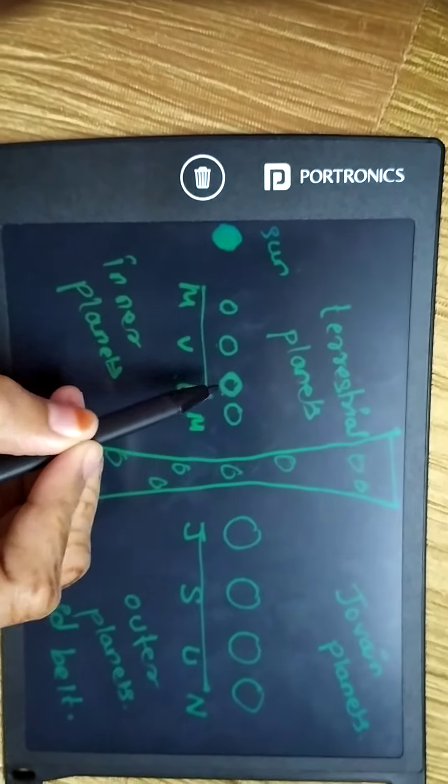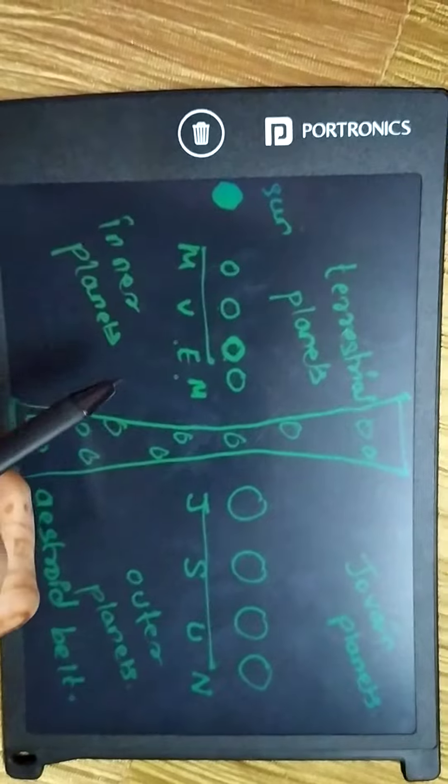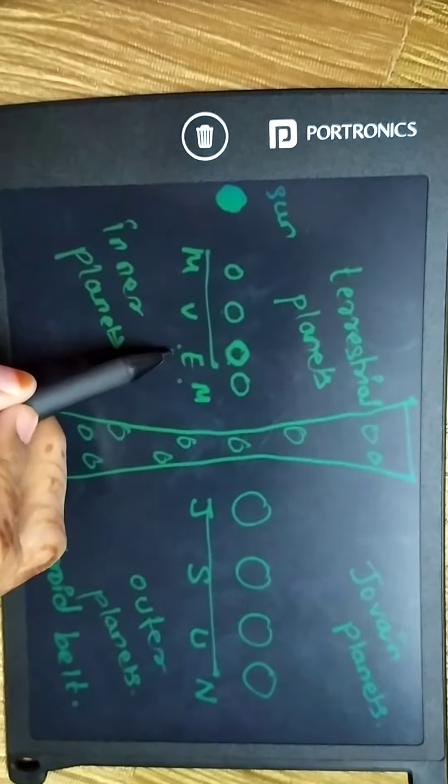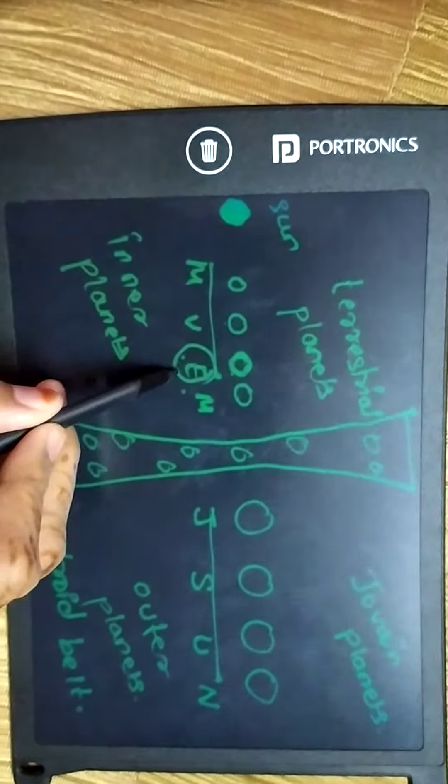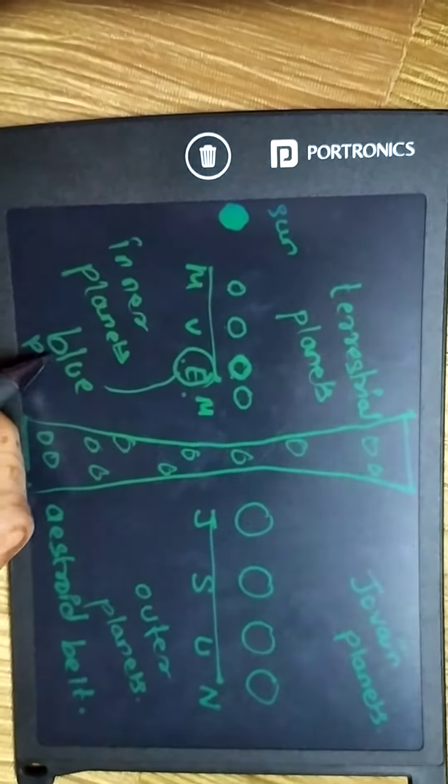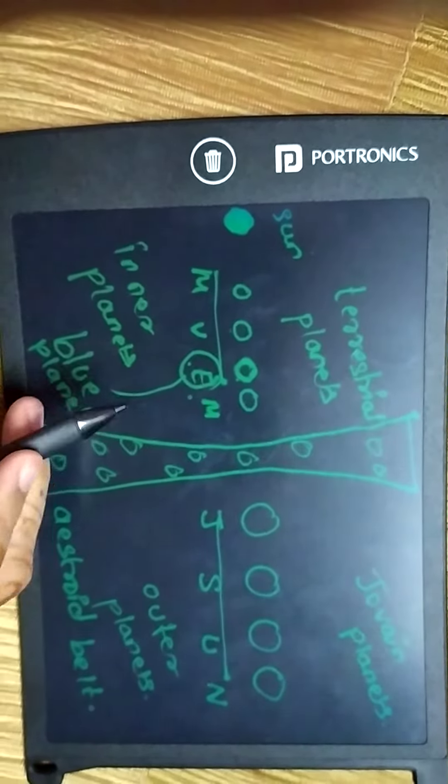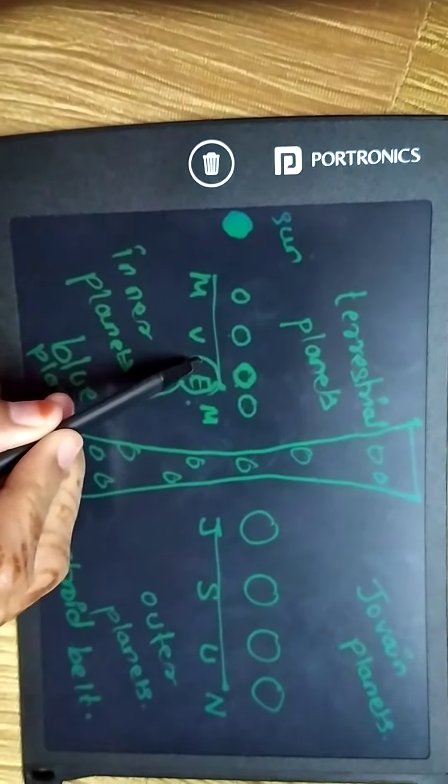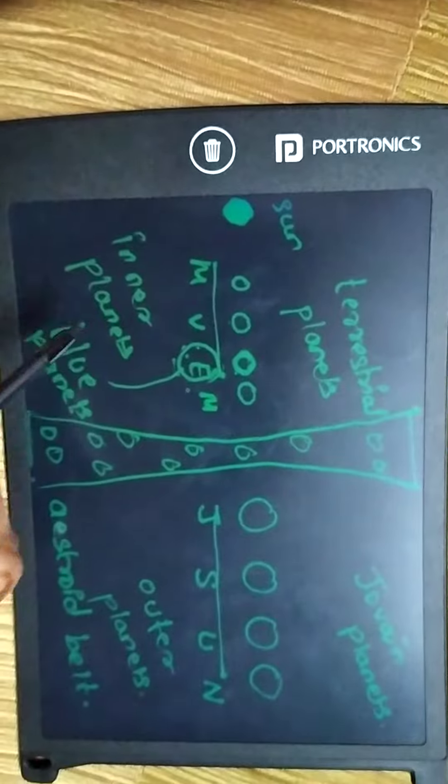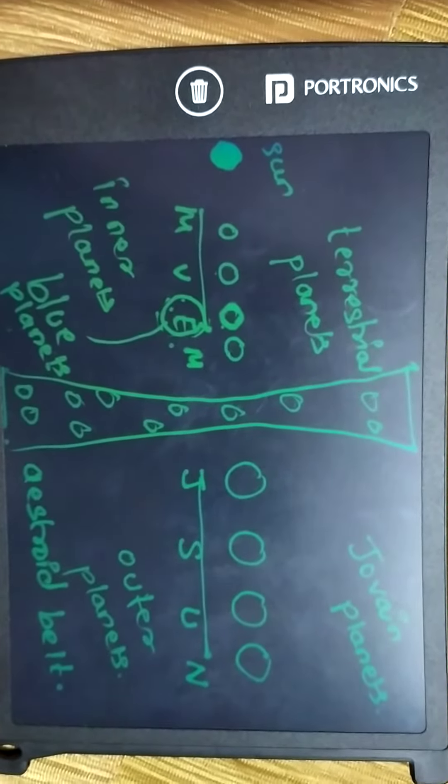Our Earth is known as the blue planet because this planet is mostly covered with ocean water. I hope you like this video, see you next time.